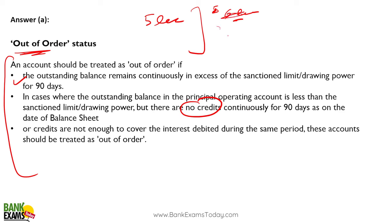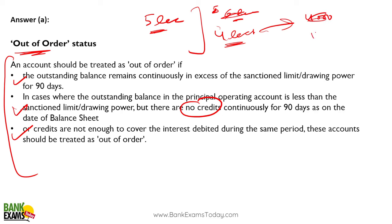Second, if the outstanding balance is within the sanctioned limit — say you withdrew 4 lakh against a 5 lakh limit — but there are no credits in the account for 90 days continuously, it becomes out of order. Third, if credits are insufficient to cover the interest cost — for example, if the interest is 4,000 rupees per month and you are not even depositing 12,000 rupees over three months — it also becomes out of order.